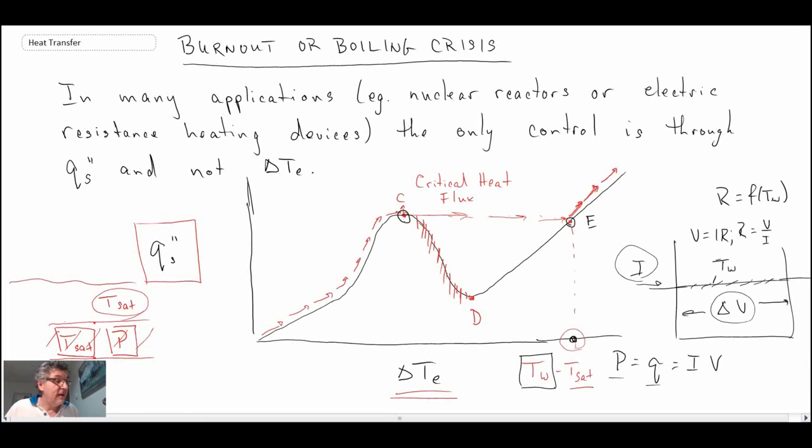So anyways, that is the boiling curve, boiling, many different aspects of it, looking at the physics. What we're going to be doing in the next lecture, we're going to be looking into the correlations that you can use in order to estimate, remember, we're after the convective heat transfer coefficient, so we're after h, and we're going to be looking at the relationships that enable us to determine what the value of h would be when we have boiling heat transfer.